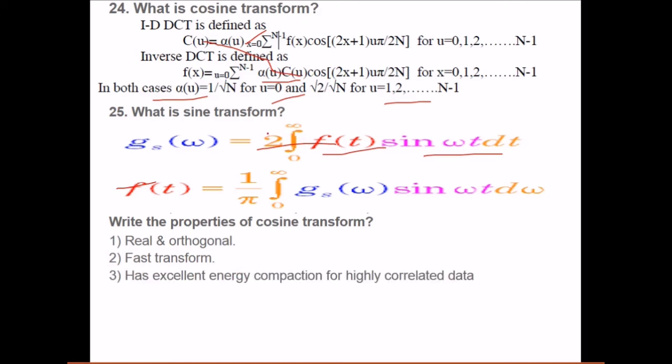What are the properties of cosine transform? Real and orthogonal. The transform coefficients are real and orthogonal. Fast transform. Has excellent energy compaction for high correlated data. That is why DCT is used in JPEG.